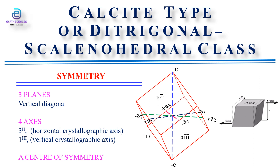We have three planes of symmetry, which are in fact vertical diagonal planes that pass midway between the horizontal crystallographic axes. Looking at the axes of symmetry, we have four axes of symmetry, out of which one is the vertical crystallographic axis, which represents a threefold axis of symmetry — meaning if you rotate the crystal 360°, you observe a similar feature three times.